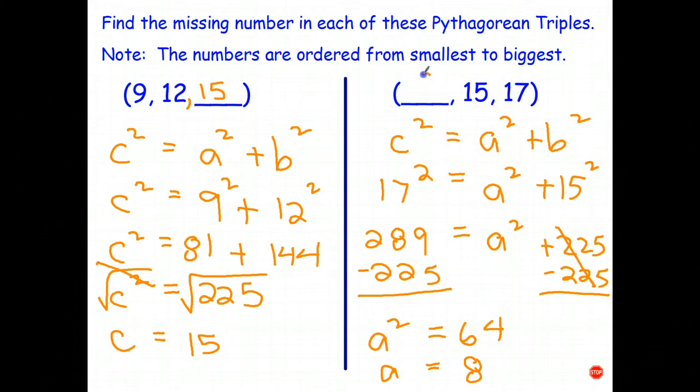So another Pythagorean triple is 8, 15, 17. And once again, these numbers do have to be whole numbers. You can't have fractions or decimals. And of course, they must be positive numbers. Okay, we'll stop the video there. We'll continue our exploration of Pythagorean triples in the next video.